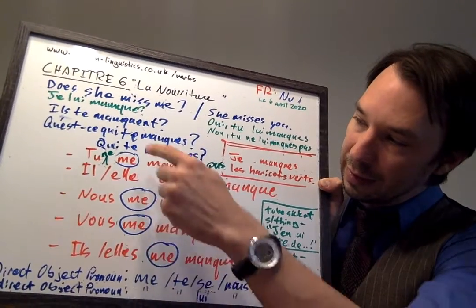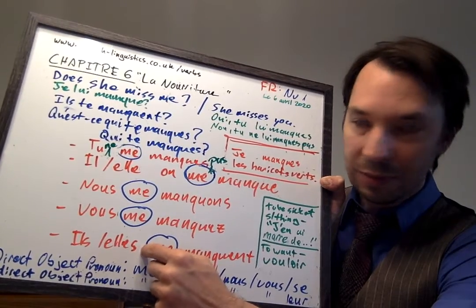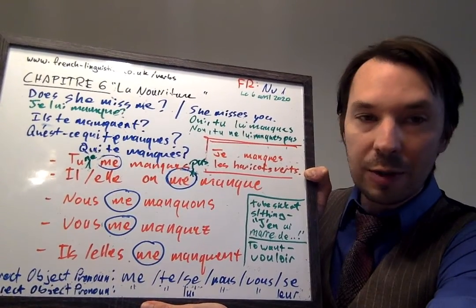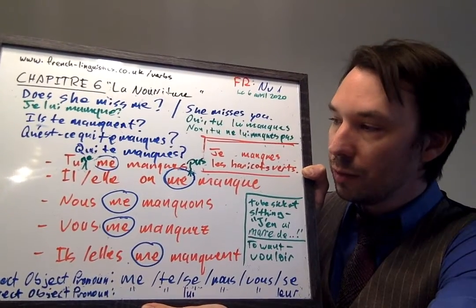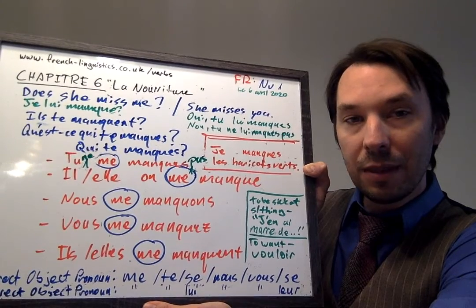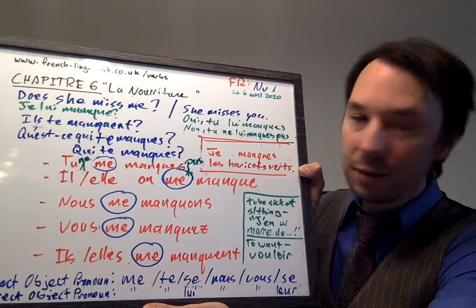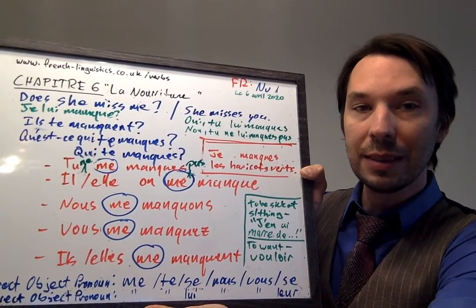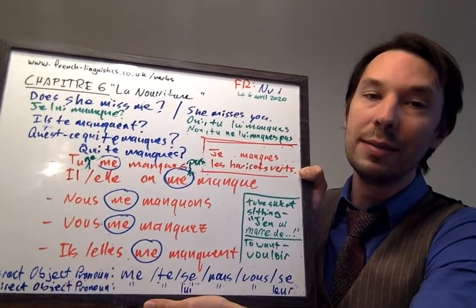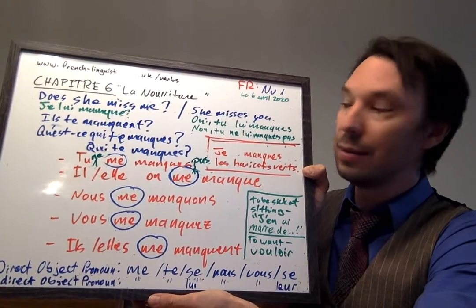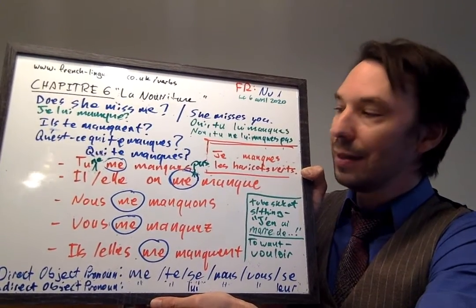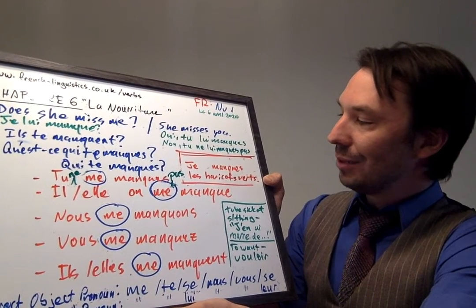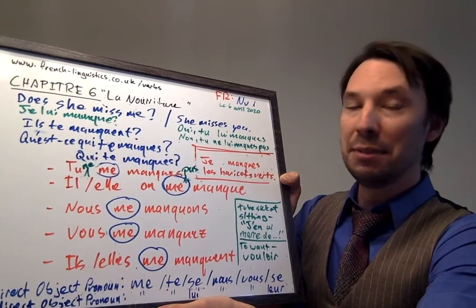For all of these, the first part of your negative — the NE — comes before the object pronoun and after the subject verb. Tu ne me manques pas. Il ne me manque pas. Elle ne me manque pas. Making it negative is pretty straightforward. For example, let's say you go to a place where green beans don't exist and someone asks about them: Les haricots verts te manquent beaucoup? You can express it as: Les haricots verts ne me manquent pas du tout.